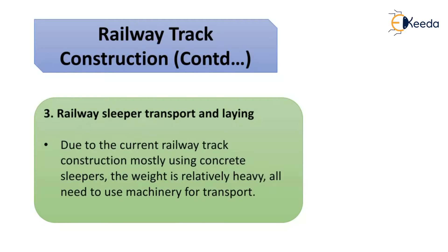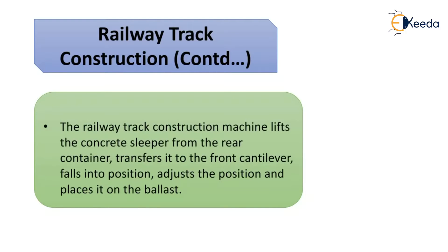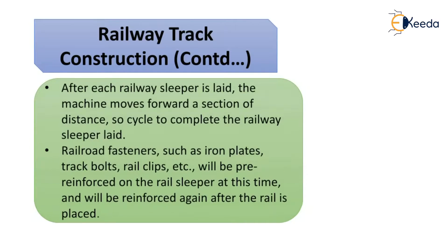Third, railway sleeper transport and laying: due to current railway track construction mostly using concrete sleepers, the weight is relatively heavy. The railway track construction machine lifts the concrete sleeper from the rear container and transfers it to the front cantilever, which falls it into position and adjusts it. After each railway sleeper is laid, the machine moves forward at a set section distance, completing the cycle.